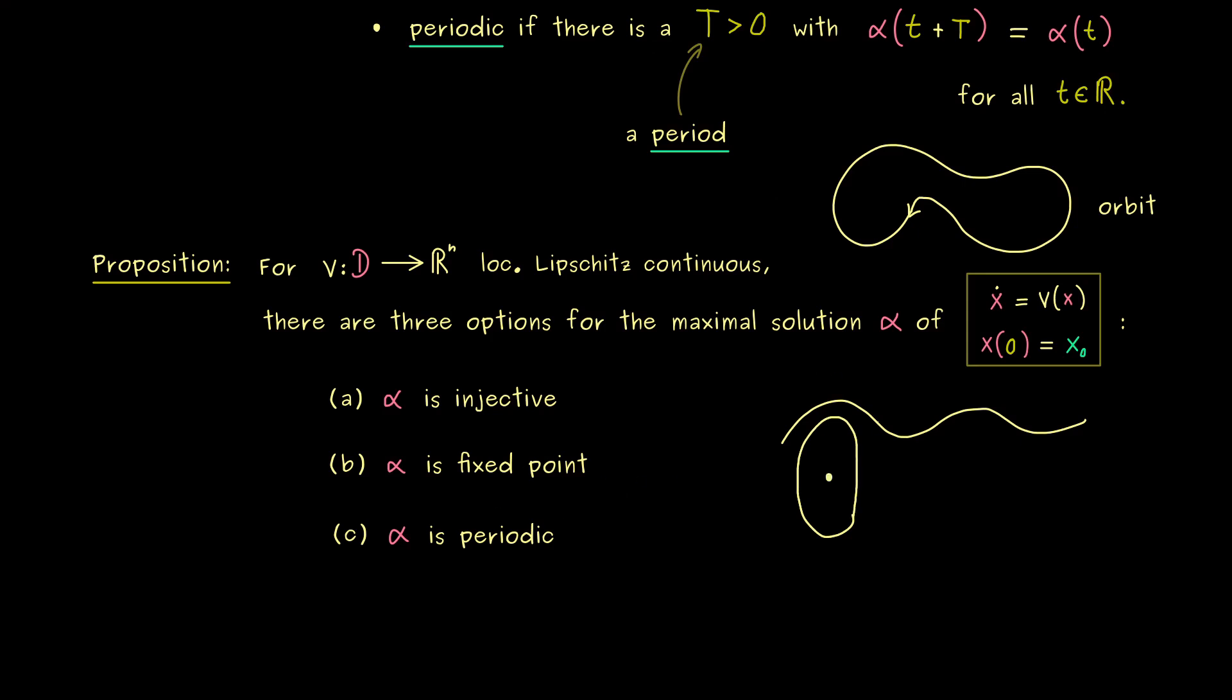So first we have the injective solution that can just go somewhere. Then we have the fixed point that just stays at the same point for all time. And we have the periodic solution that goes around and around. Moreover only the injective solution might not exist for all time. So only there the domain of alpha could be smaller than the whole set R.